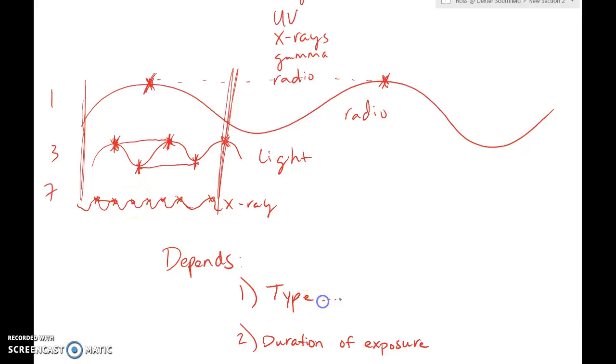So by type, really what we mean is the length of the wave. So generally speaking, a long wavelength is safer than a short wavelength, meaning that you can be exposed to a longer duration of the radio waves than you can of the x-rays and still be safe.